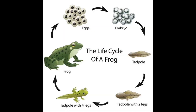You have already learned about five cycles: the seasonal cycle, the life cycle of a flowering plant, the life cycle of a tree, the life cycle of a chicken, and the life cycle of a frog. Today you will learn about the life cycle of a butterfly.